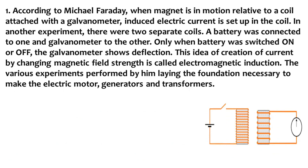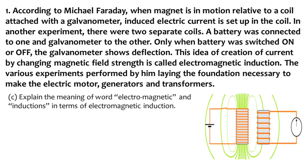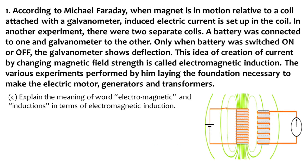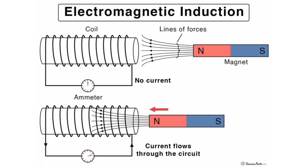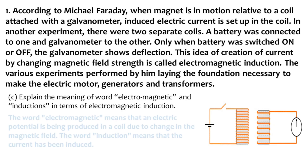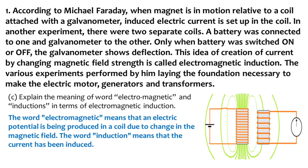Third question: explain the meaning of the words 'electromagnetic' and 'induction' in terms of electromagnetic induction. The word 'electromagnetic' means that an electric potential is being produced in the coil due to change in the magnetic field. And the word 'induction' means that the current has been induced.